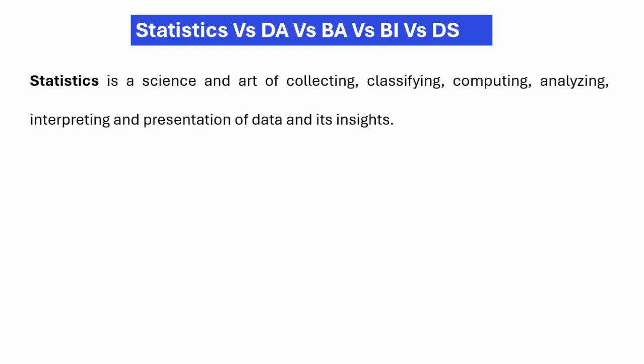Through computation we get results in text or number format. Then through the analyzing process — analysis is the thought process — we analyze what that value means. Then we interpret the complete meaning of that value, what does it indicate? And finally we present the data and its insights. This is the role of statistics; it is in the core, it is both science and art.